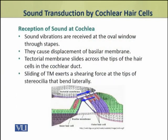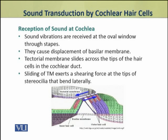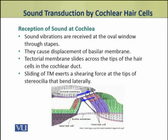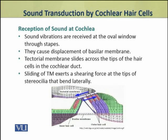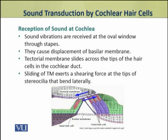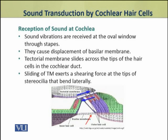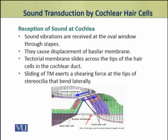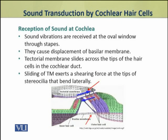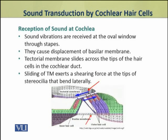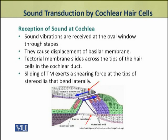The cochlea receives sound vibrations at the oval window through the stapes. This causes the displacement of the basilar membrane. As a result, the tectorial membrane slides across the tips of hair cells in the cochlear duct.